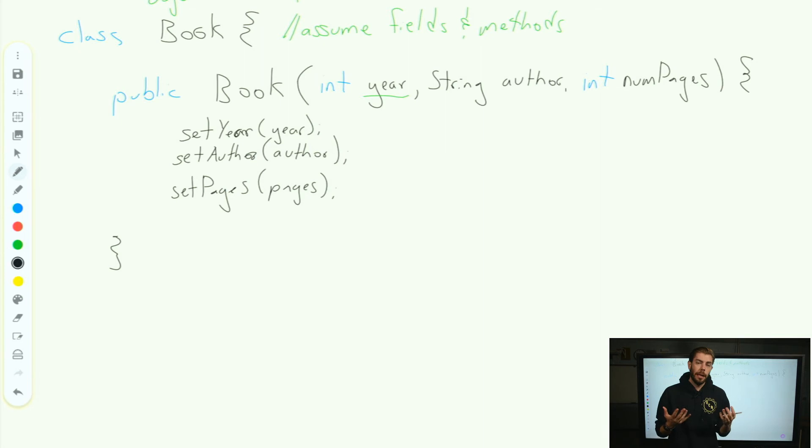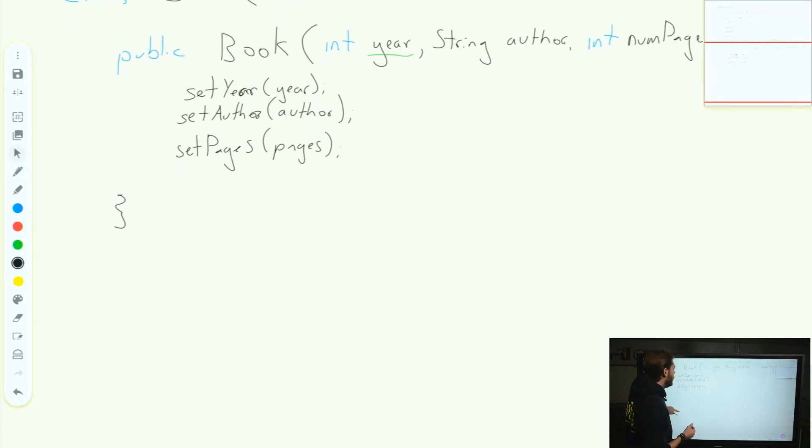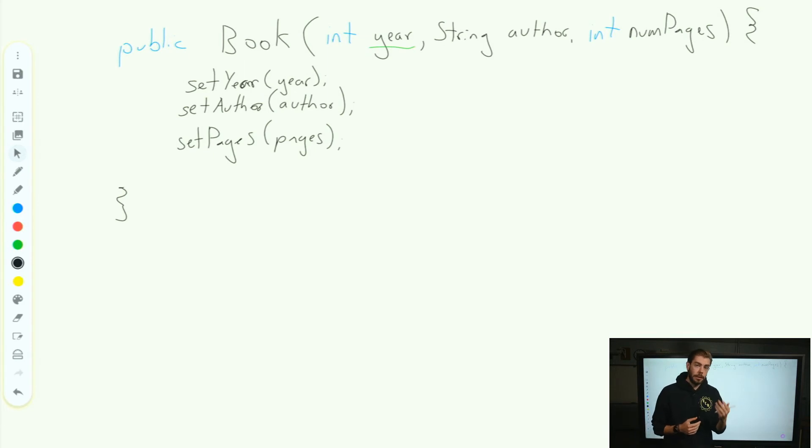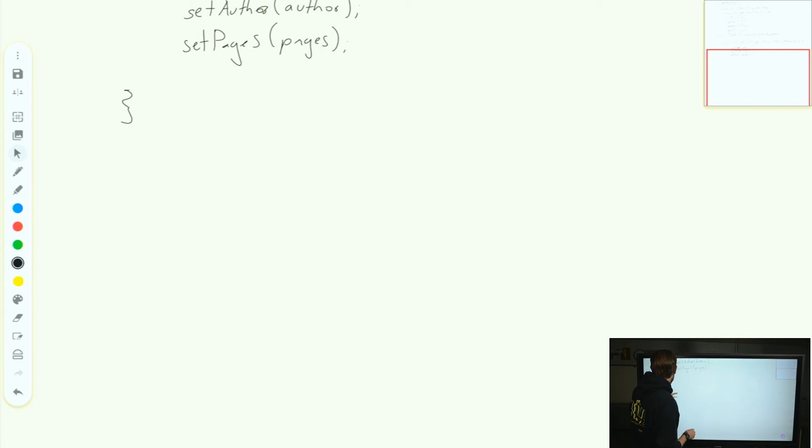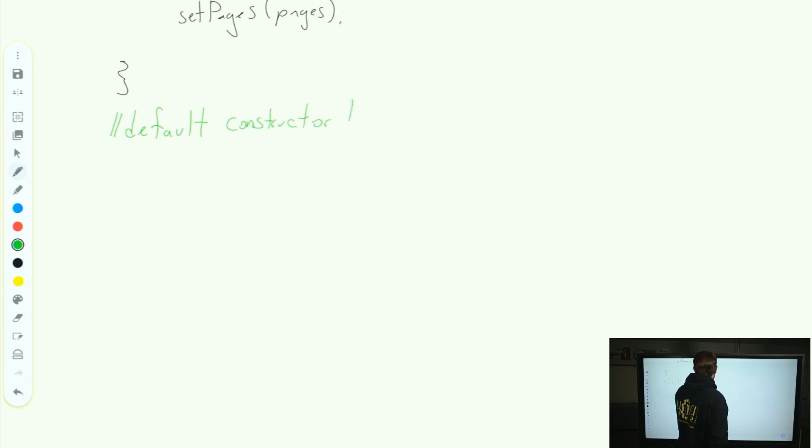Now, what if I want to create a book, but I don't know this information? Well, now that I've written a constructor, I won't have access to the default constructor. Java no longer does that default constructor for me, so I need to create my own default constructor. And a default constructor is generally considered a constructor with no parameters.